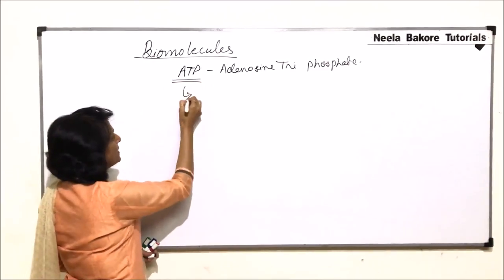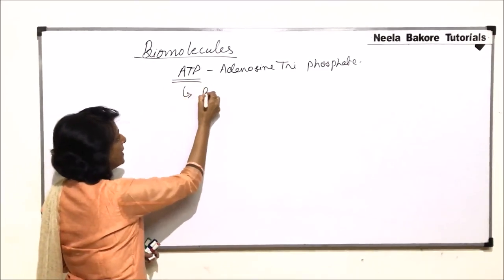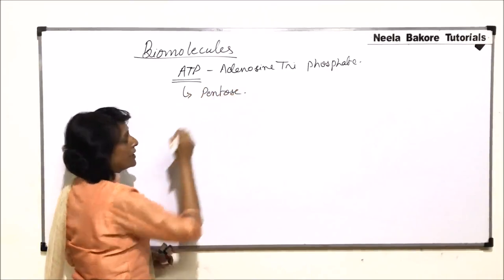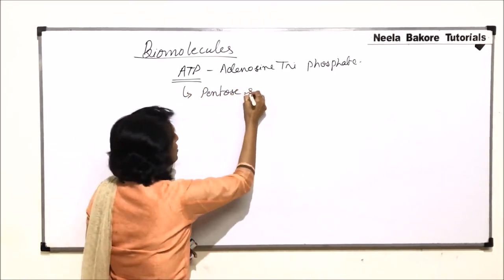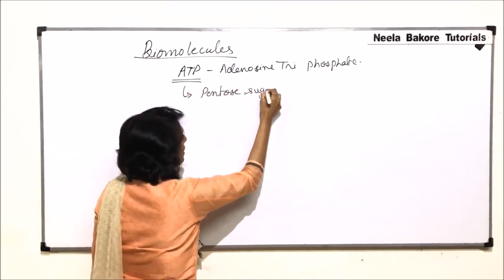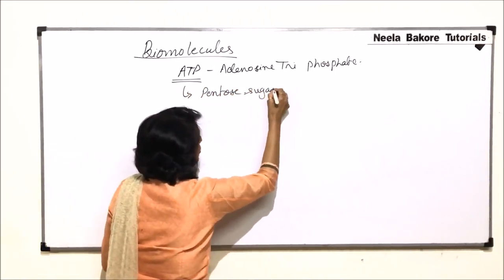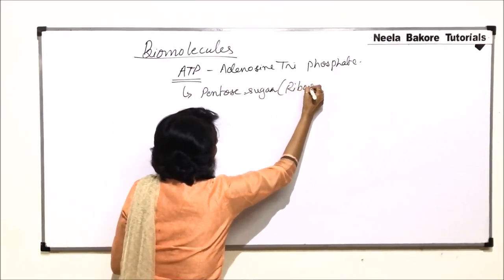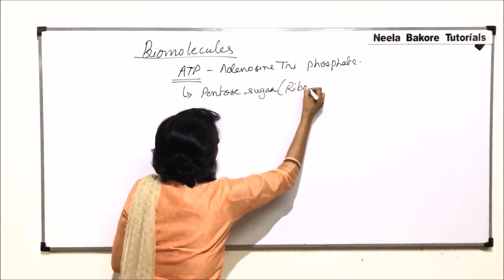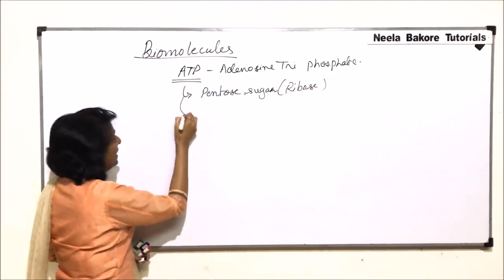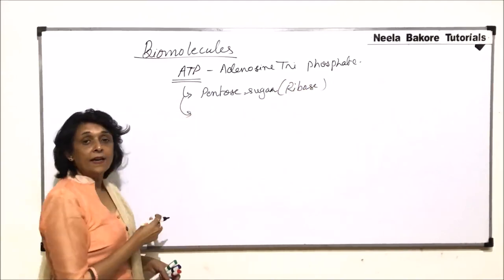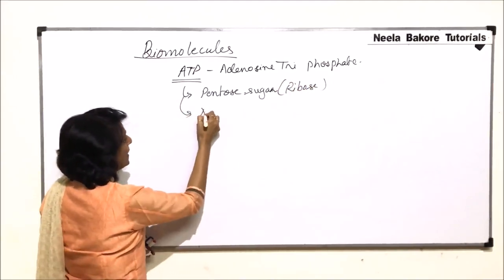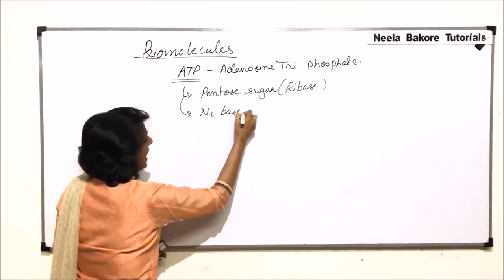In nucleotides, we said there is a pentose sugar. Here also there is a pentose sugar, and that pentose sugar is ribose — like in the case of RNA. Second, there is a nitrogen base, and the nitrogen base is adenine.